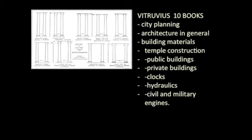The ten books of architecture by Vitruvius are varied. There's a chunk on architecture where he talks about the orders and types, but he also suggests the architect has expertise in quite a lot of other things: city planning, building materials, temple construction, public and private buildings. But then you get onto things architects nowadays have completely given up on — like making clocks, hydraulics, waterworks, dams, and civic and military engines, fortifications and things like that.